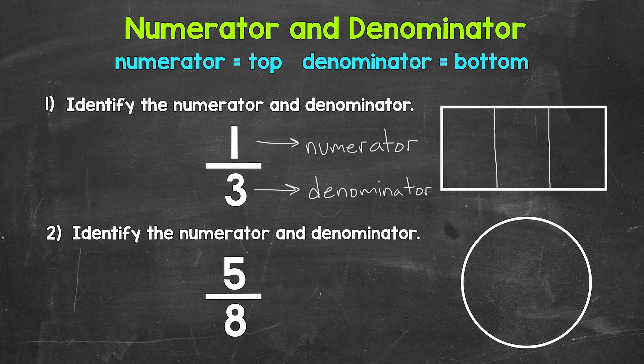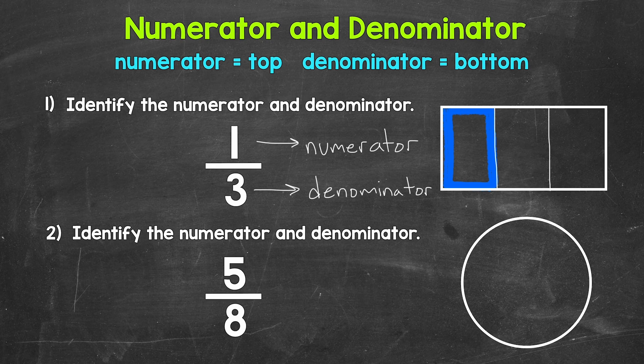Let's move on to the numerator. The numerator is the number of equal parts we have out of the whole — the number of equal parts we are working with for whatever the situation may be. The numerator is 1 here, so we have 1 equal part out of 3. So let's shade 1 out of the 3 parts to represent that numerator and the fraction all together. And that's it — there's 1 third, 1 equal part out of 3 total equal parts.